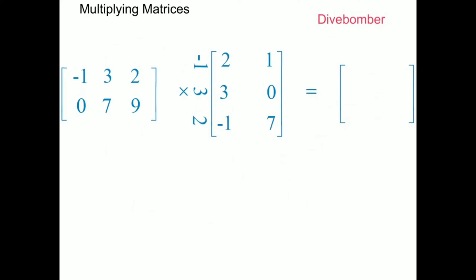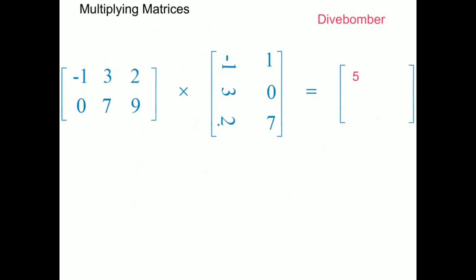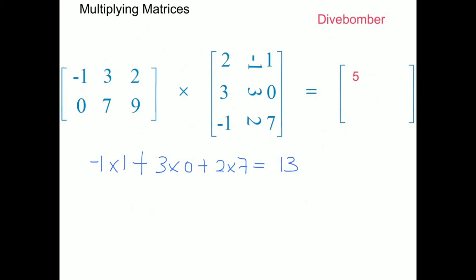Now that we've dive bombed and matched up our numbers, we do the arithmetic: negative 1 times 2, plus 3 times 3, plus 2 times negative 1, which equals 5. Because this was row 1 column 1, the answer 5 goes into row 1 column 1 of the answer matrix. Then we dive bomb the second column: negative 1 times 1, plus 3 times 0, plus 2 times 7, which equals 13. That goes into row 1 column 2.